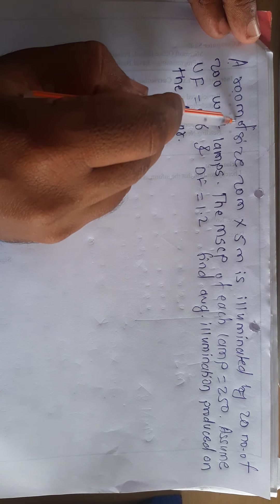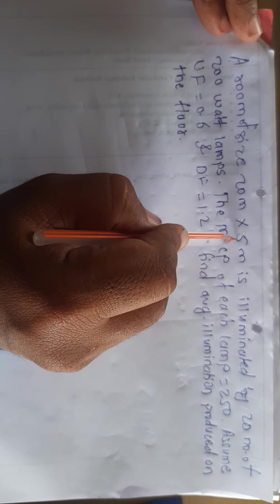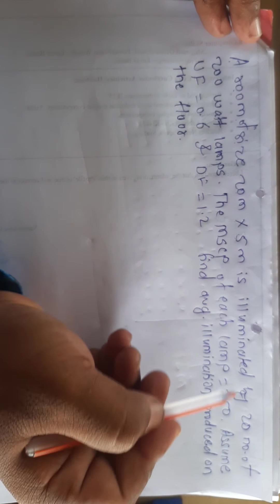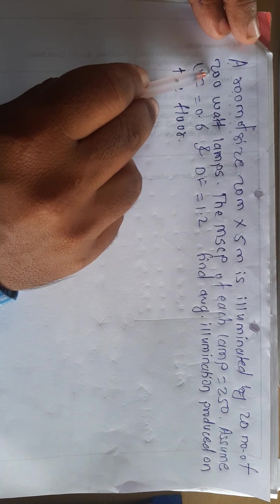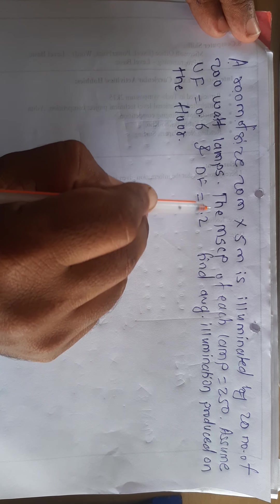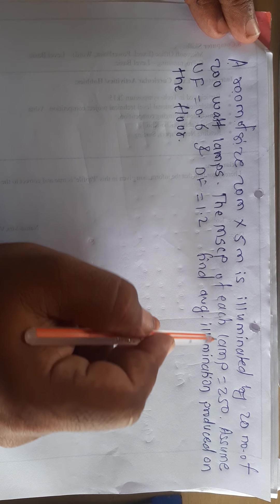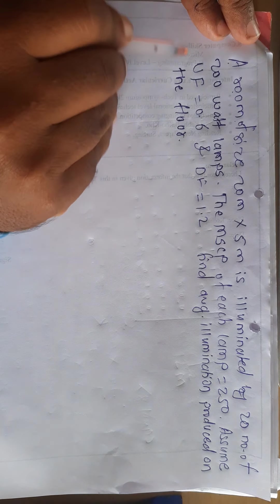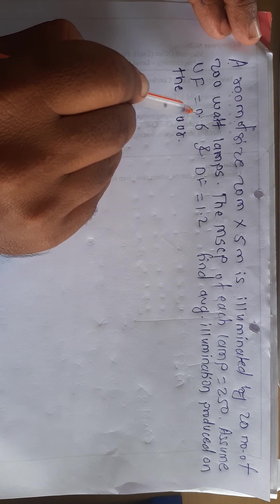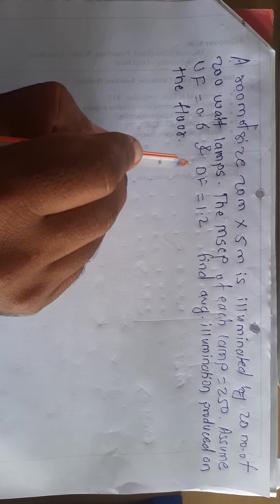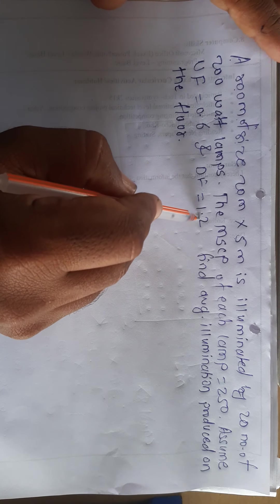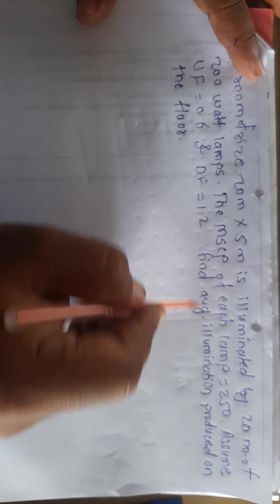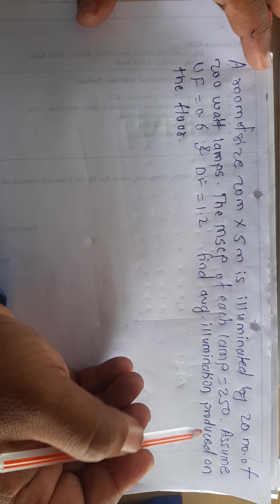A room of size 20 meter into 5 meter is illuminated by 20 number of 200 watt lamps. The MSCP of each lamp is equal to 250. Assume utilization factor is 0.6 and depreciation factor is 1.2. Find average illumination produced on the floor.